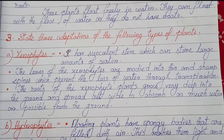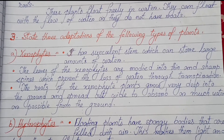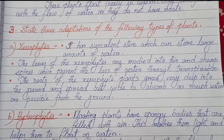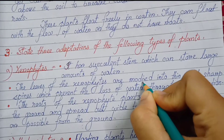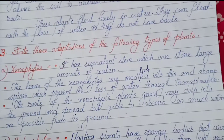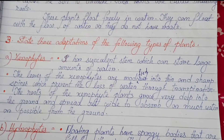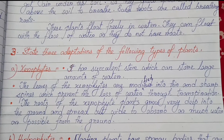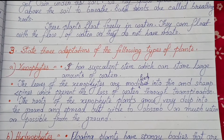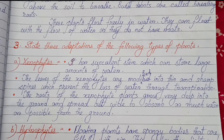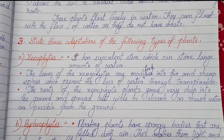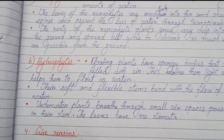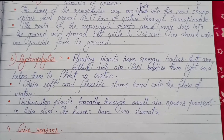Number three: state three adaptations of xerophytes. They have a succulent stem which can store large amounts of water. The leaves of xerophytes are modified into thin and sharp spines, which prevent the loss of water through transpiration. The roots of xerophyte plants grow very deep into the ground and spread out wide to absorb as much water as possible.